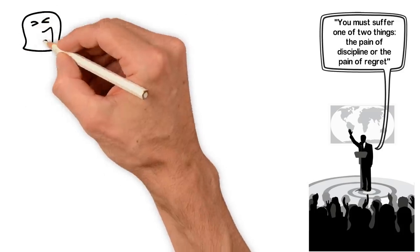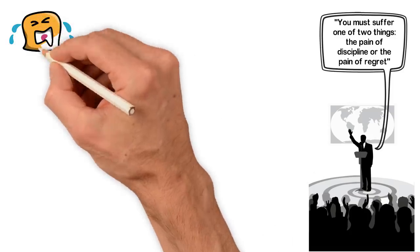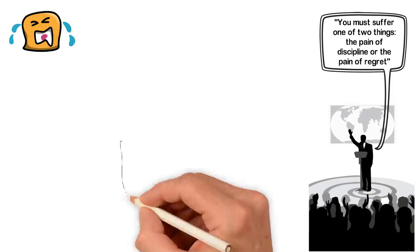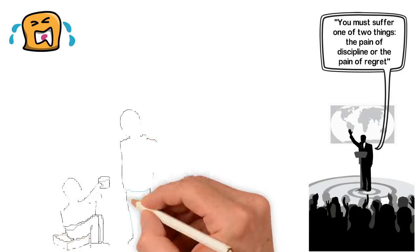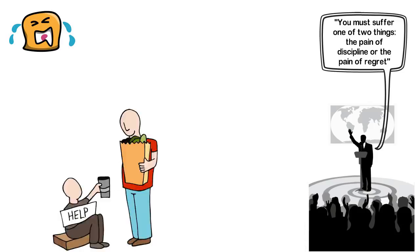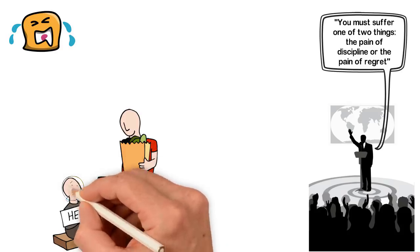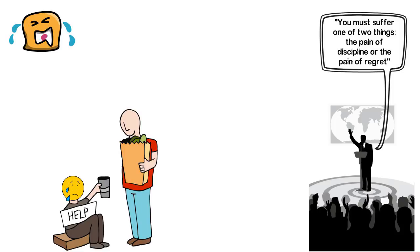In your life, you'll suffer. In your life, you'll go through pains. In your life, you'll cry. But you have the choice. You can choose to suffer the pains that come from being disciplined or wait for the pains that come from poverty, loneliness, depression and failure. You must suffer one of two things, the pain of discipline or the pain of regret.